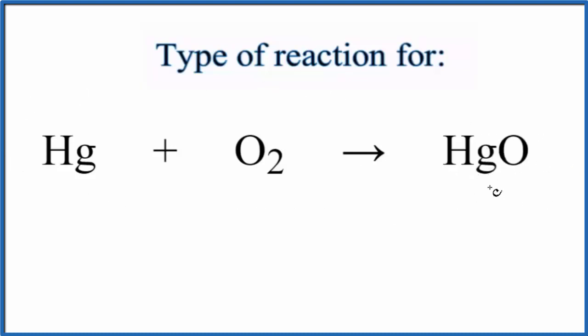When we look at the equation, we see we have two substances in the reactants. We have the Hg and then the O2. These two substances combine to form one substance, the HgO.